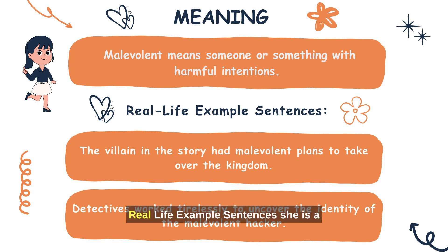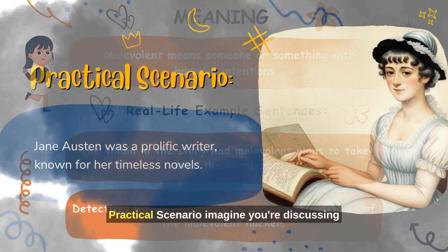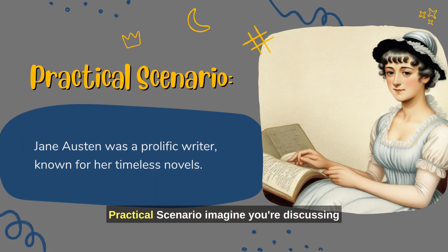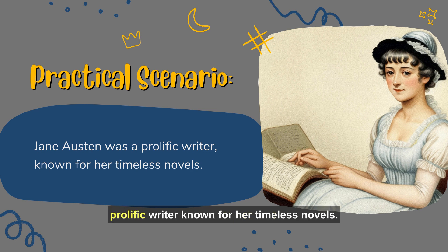Real-life example sentences: She is a prolific writer, having published over 20 novels. The artist's prolific creativity resulted in a vast collection of paintings. Practical scenario: imagine you're discussing an author's body of work. You might say, 'Jane Austen was a prolific writer, known for her timeless novels.'